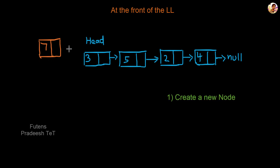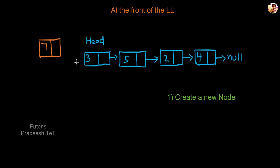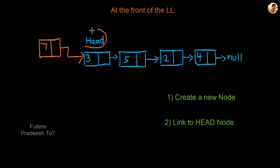Step one: create one node. Create one node structure in the code. This is the data pointer — next node pointer. That is the coding. Create one node. The second step: the node's next pointer should point so the link list is proper. In the first node, the first step is to create one node. The next node is 3, so 3 is the head. The next node is the head.